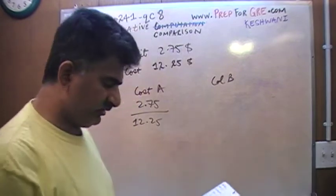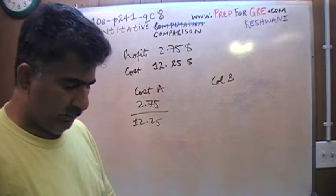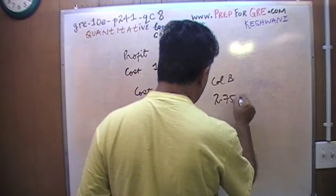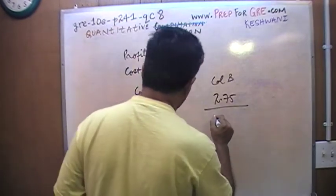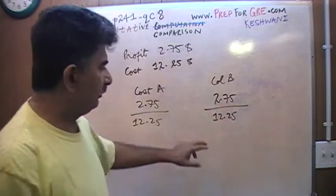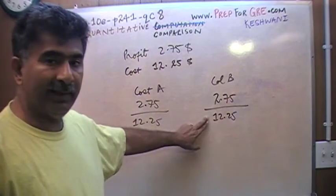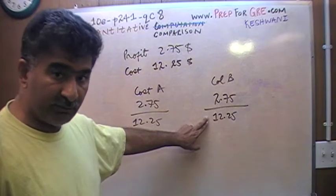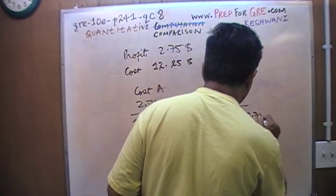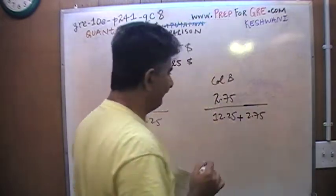In column B, they want you to express the profit as a percentage of the sale price. Well, the profit again is $2.75, and the sale price would be the $12.25 that the merchant himself paid for the sweater, his cost, plus $2.75. This obviously is the sale price.